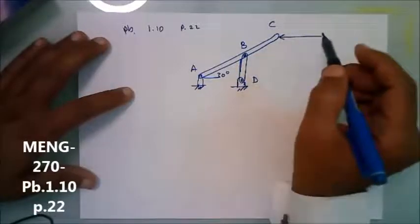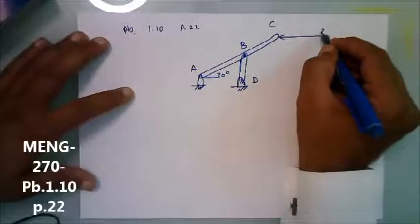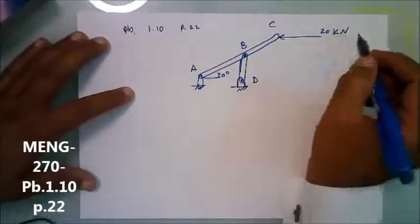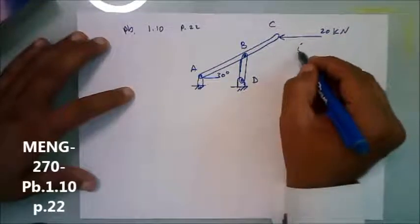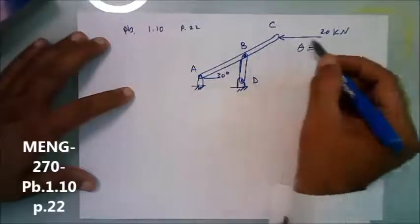For the first case, this is the force which is 20 kN. Assume theta here is equal to zero, this means it's horizontal.